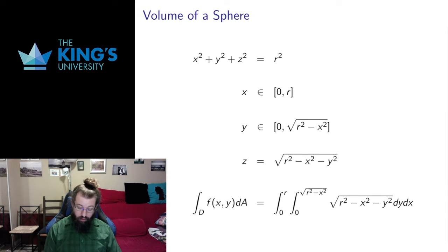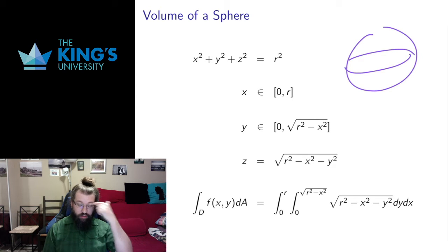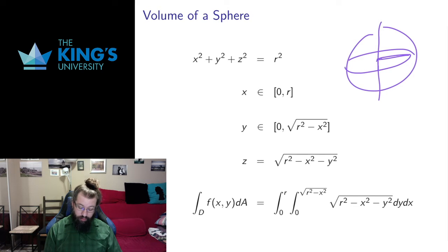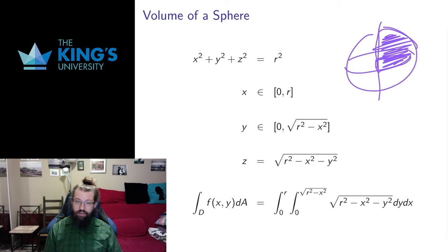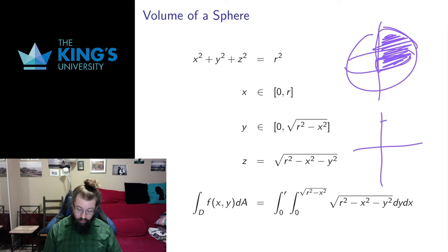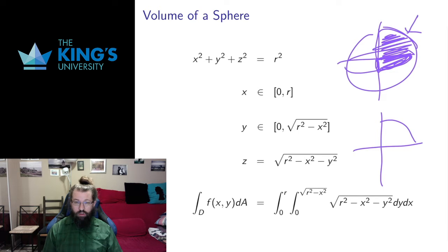First I want to talk about the volume of a sphere. I'm going to calculate just one eighth of the sphere. If I look at a piece that is on the top half of the sphere over a quarter circle, I get this eighth of a sphere. If I get the volume of that eighth and multiply by 8, I'll get the volume of the entire sphere by symmetry. So that means I want to integrate over a quarter circle in the plane, and above that circle integrate a function whose graph is the sphere.